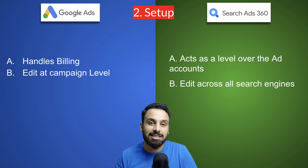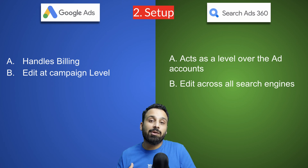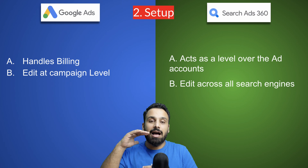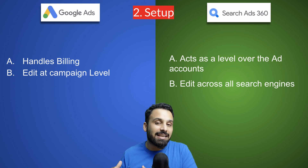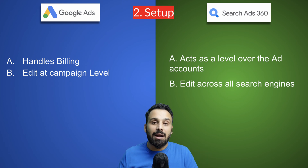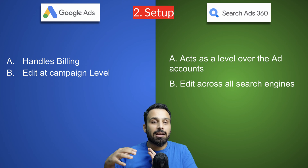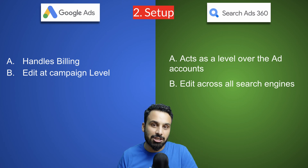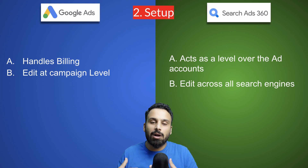The second difference is about setup. In Google Ads, you create an ad account, add billing, and run campaigns — the media buying and billing are all handled within Google Ads. Search Ads 360, however, works as a top-level account sitting over all your search ad accounts. For example, if you want to run campaigns on both Google Ads and Microsoft Bing, you cannot simply go to Search Ads 360 and push campaigns to those platforms. You still need to create individual Google Ads and Microsoft Bing accounts with billing set up, and then integrate them with Search Ads 360.